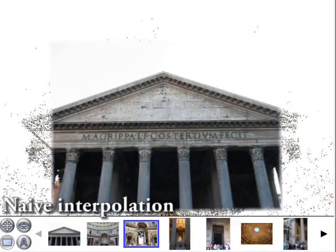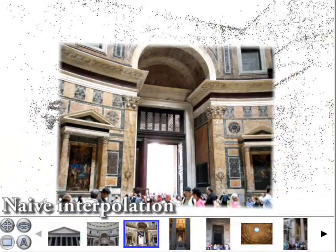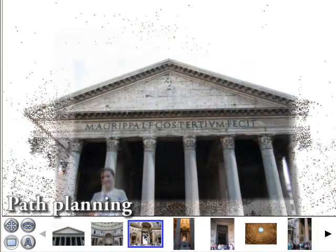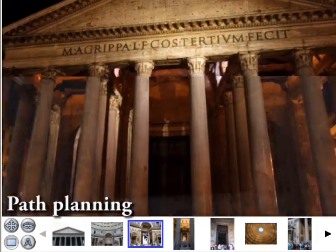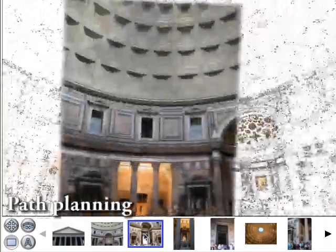Naively interpolating the viewing parameters produces an unsatisfying transition. Instead, we use a new path planning algorithm that generates transitions which pass through intermediate photos as closely as possible. For this transition to a view taken inside the Pantheon looking towards the entrance, the system computes a path that first moves through the doorway, then turns around 180 degrees.